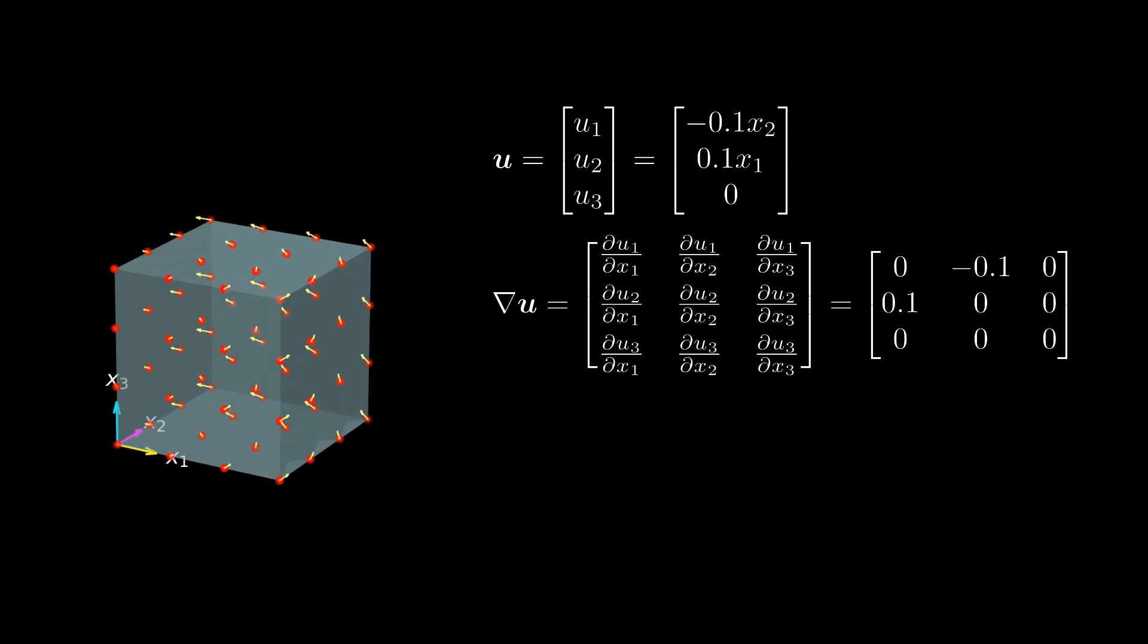It turns out that the rotation of matter is directly linked to the skew-symmetric part of the displacement gradient. This means by subtracting the skew-symmetric part of the displacement gradient, we can remove all contributions that arise from rotations.